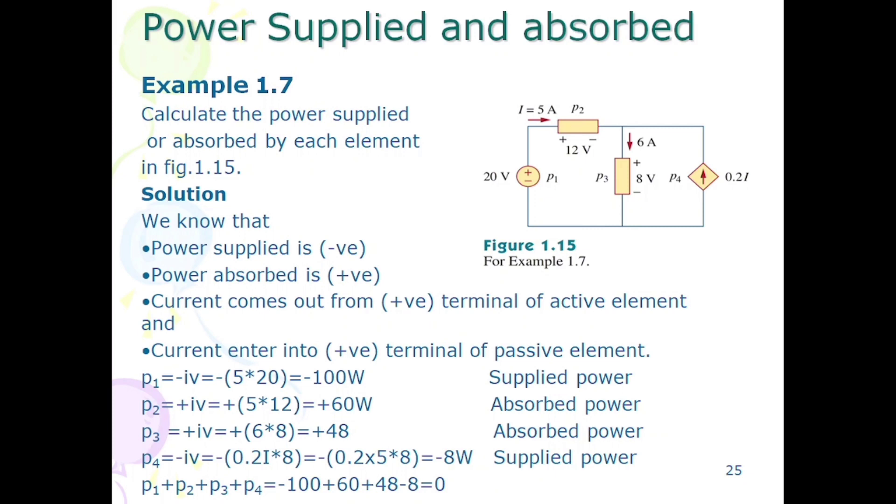Now come toward the p4. P4 is basically a current controlled current source 0.2i. Here a value of i is 5 ampere, it depends upon the current 5 ampere. Now p4 is an active element and it is a dependent current source, and every source supplies power.